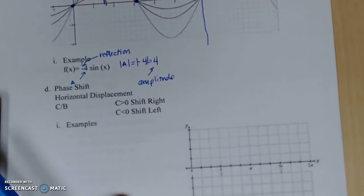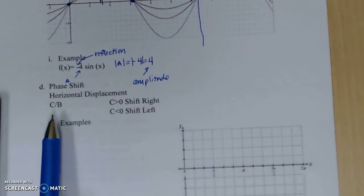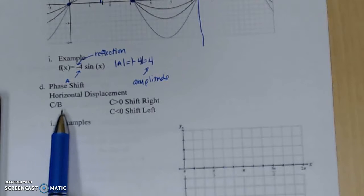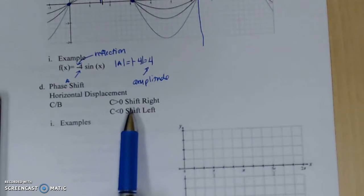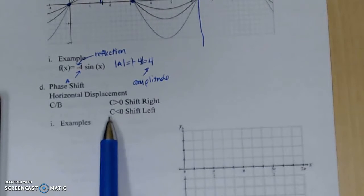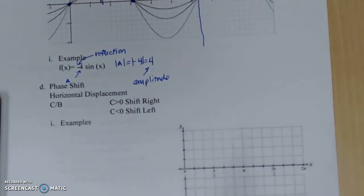First of all we're going to look at horizontal displacement. You can see that we're going to be looking at C divided by B, comes from that general form. If C is greater than zero, we're going to be looking at a shift to the right, and if C is less than zero, we're going to be looking at a shift to the left.